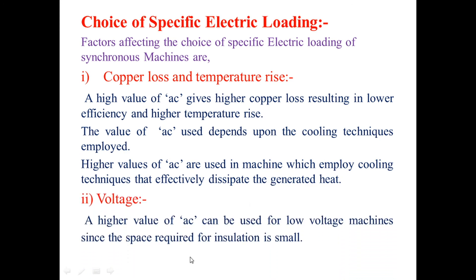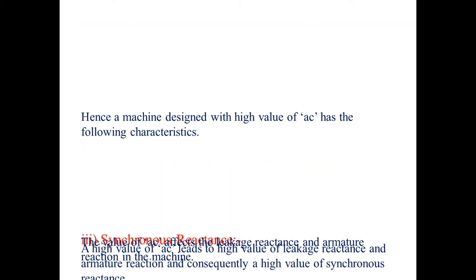The second factor is voltage. A high value of AC can be used for low-voltage machines since the space required for insulation is small. In high-voltage synchronous generators, more insulation space is needed, so a lower value of AC should be used.